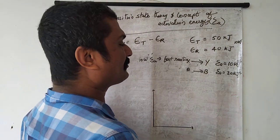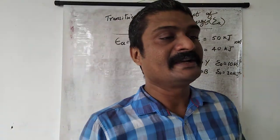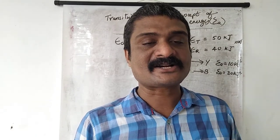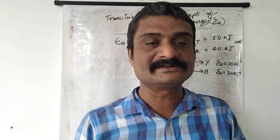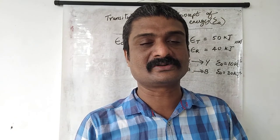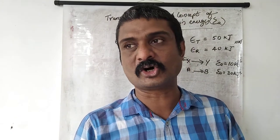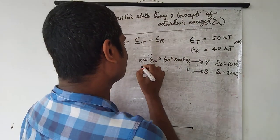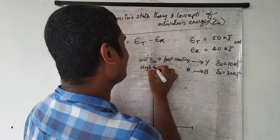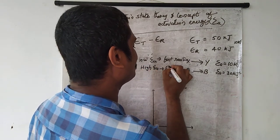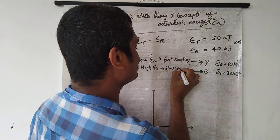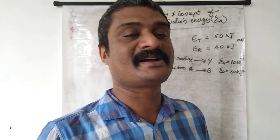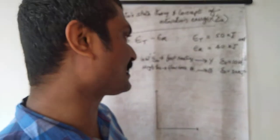In the same manner, if the activation energy is high, the reaction takes place quite slowly. High activation energy leads to slow reactions. So to summarize: low activation energy for fast reactions, and high activation energy for slow reactions.